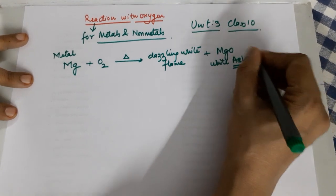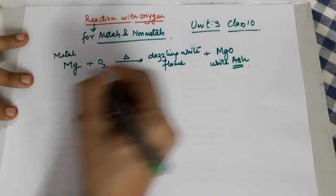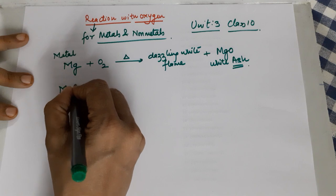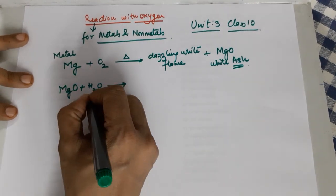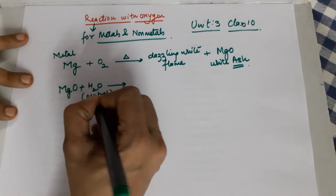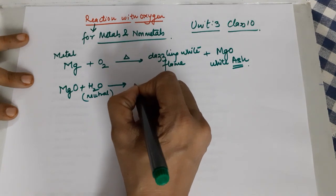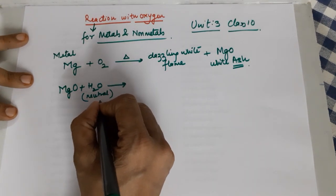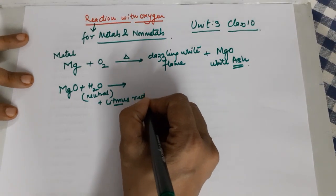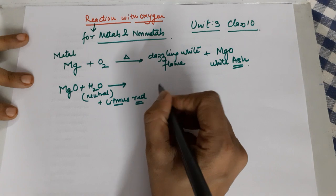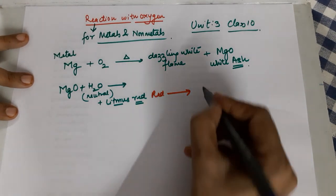The burning is accompanied with the formation of magnesium oxide, which is a white colored ash. This metal oxide is soluble in water, so when you add water to the magnesium oxide ash — water which is neutral, neither acidic nor basic — it leads to the formation of something. You also add red litmus solution to it.